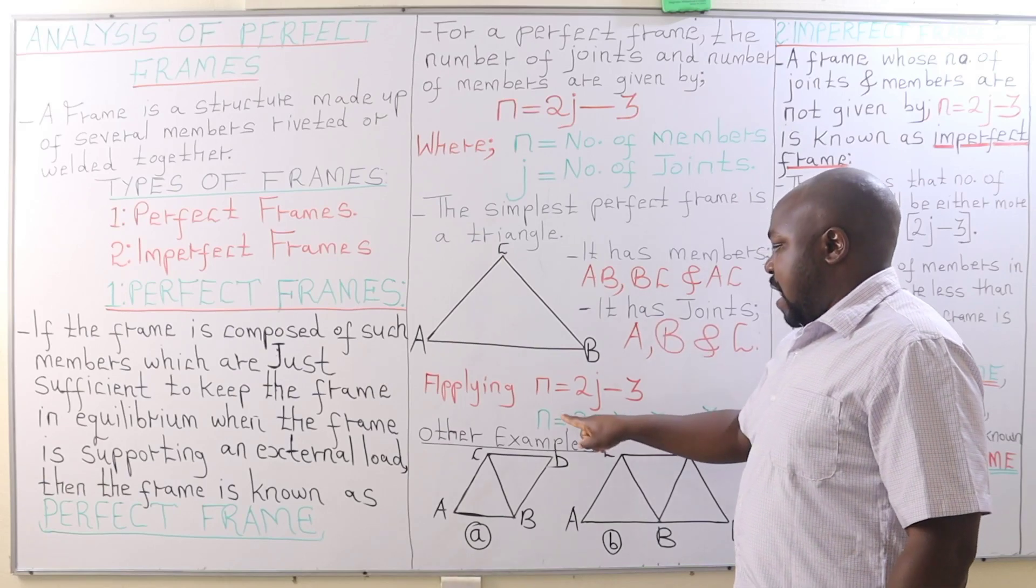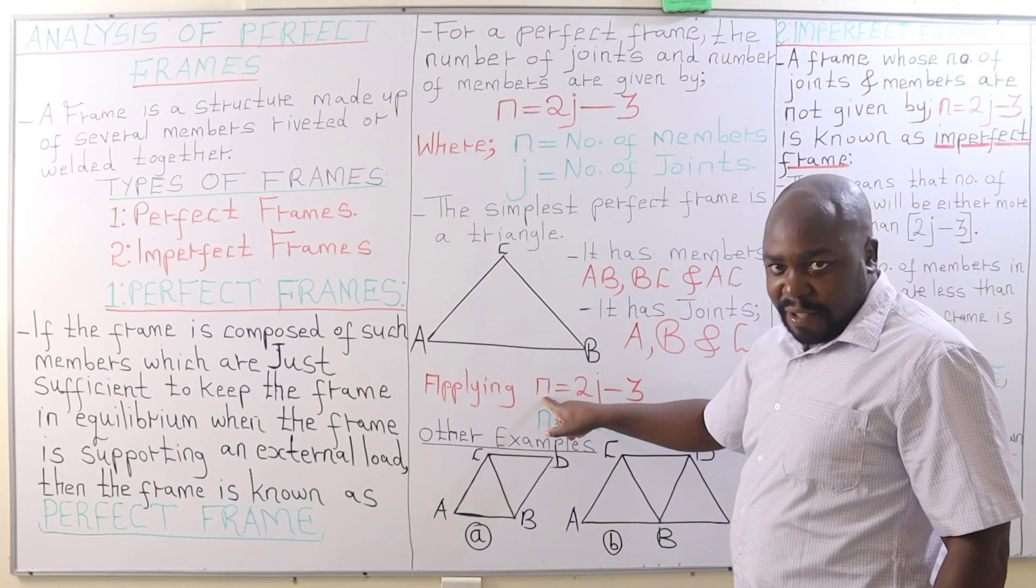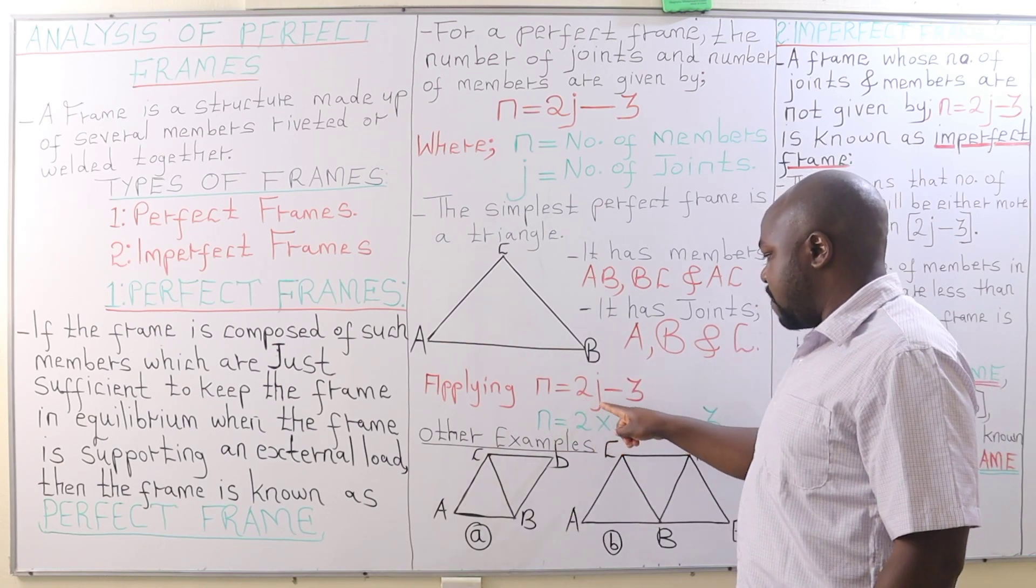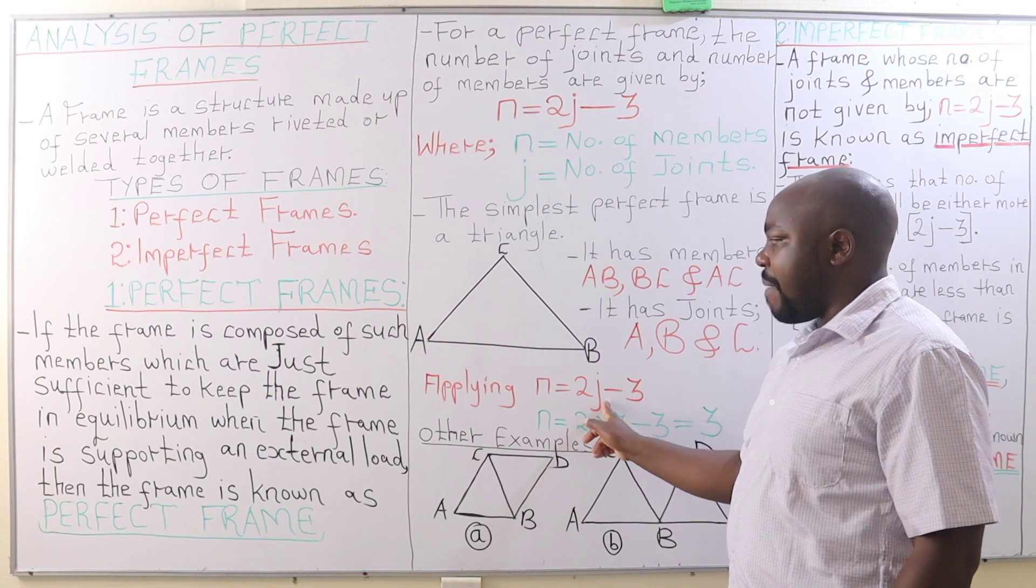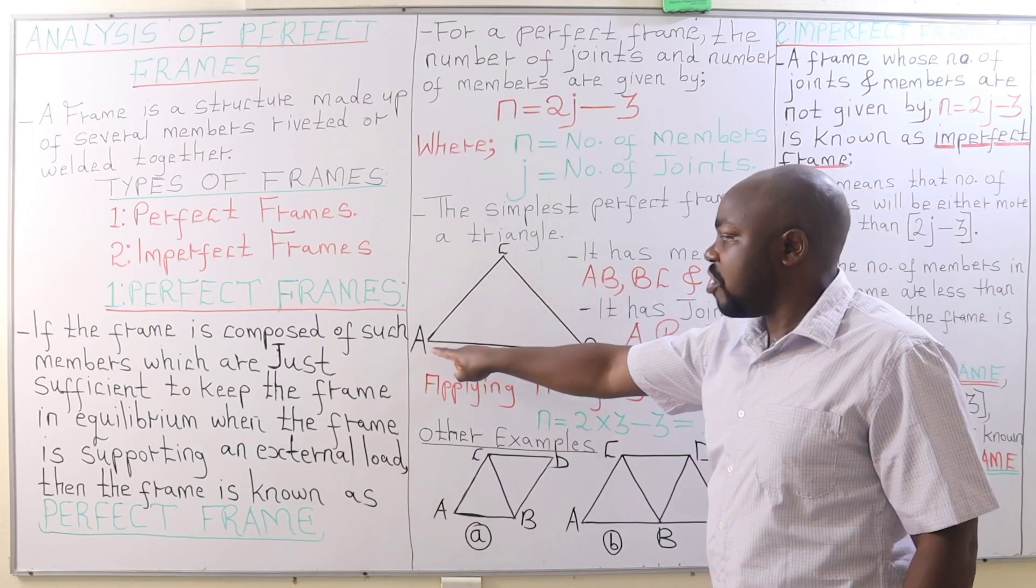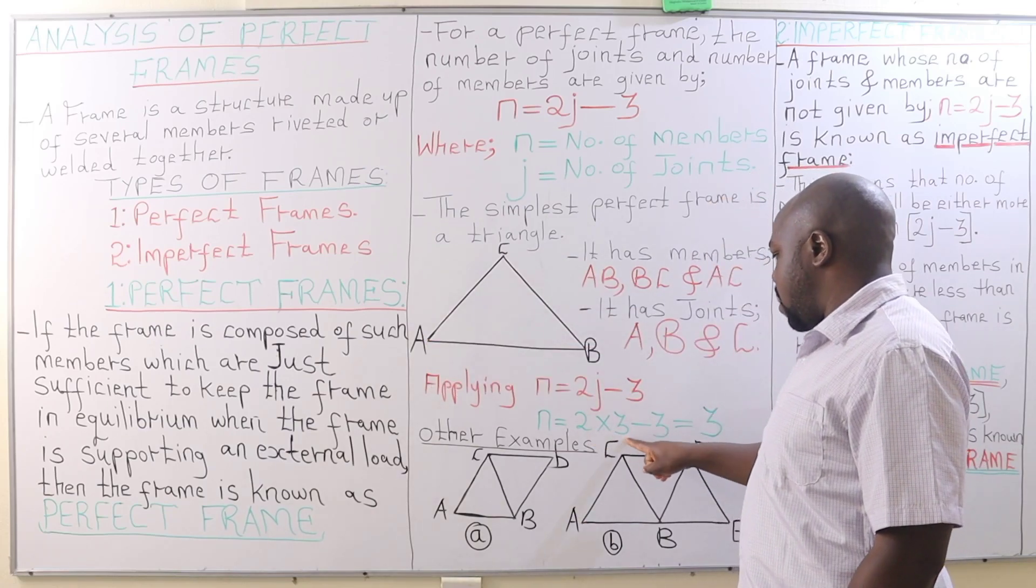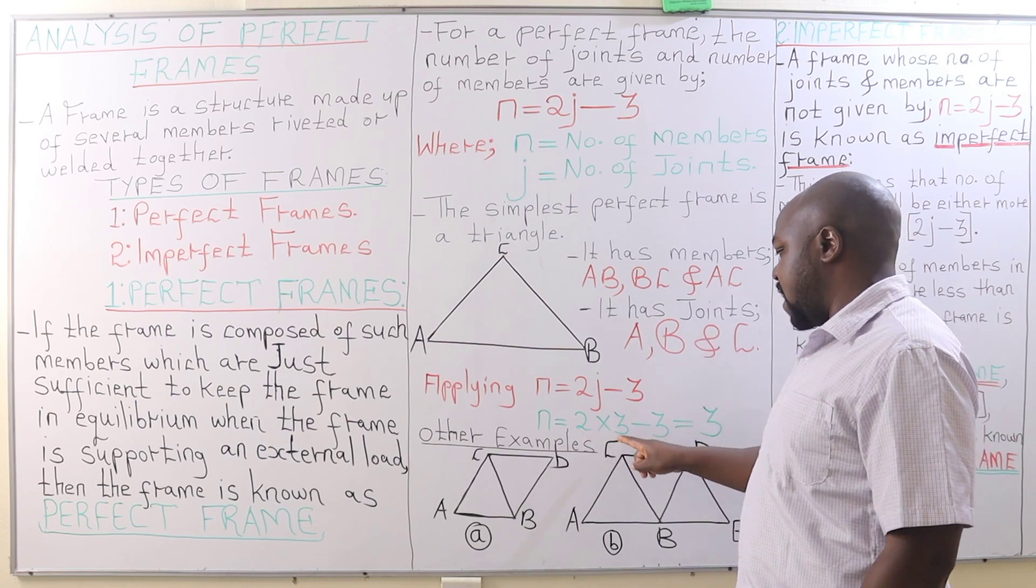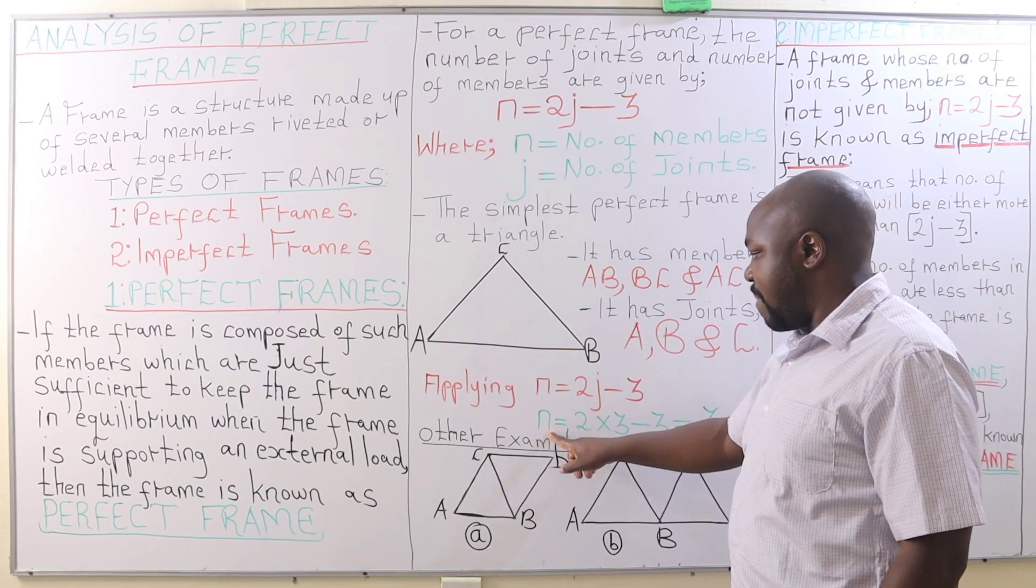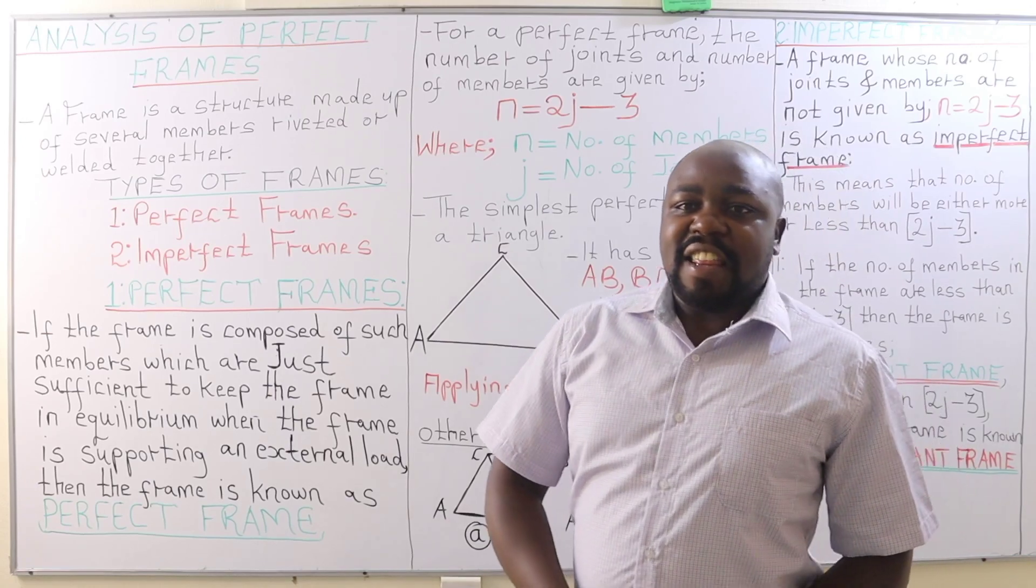Let's assume that we don't know the number of members. To get the number of members, we say 2 times j. J is the number of joints, and this triangle has three joints in total. Therefore, we have 2 times 3 minus 3, which is 6 minus 3, which equals 3. Therefore, the number of members is 3, and actually they are practically 3.